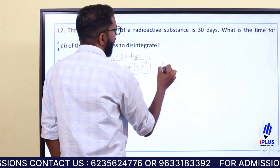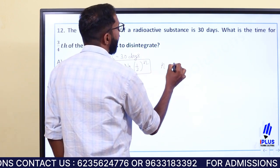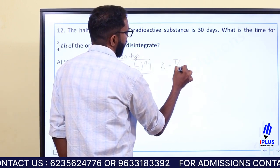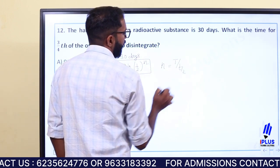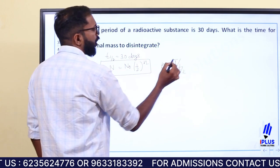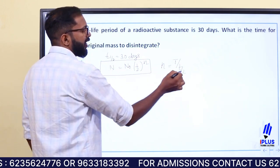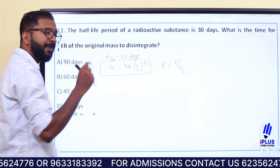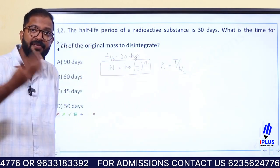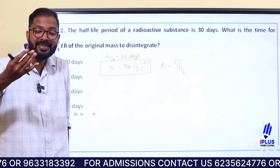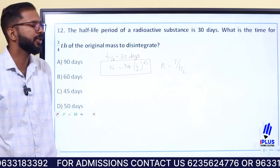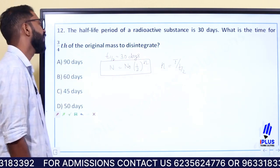In the half life formula, n is the number of half lives, T is the total time, and T-half is the half life period. The number of half lives n equals total time T divided by T-half.